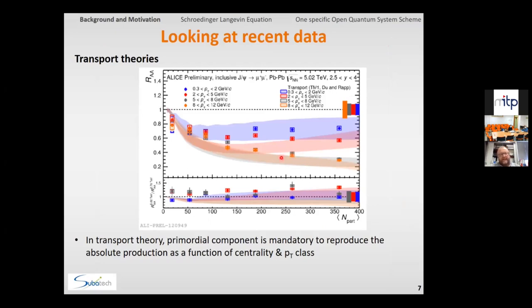So this is, for instance, here, comparison of the transport approach by Doo and Rap, as a function of the number of particle participants, and for various PT classes. And obviously, there is a good agreement there.